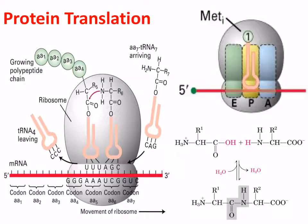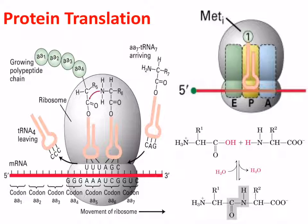Just to remind ourselves what protein translation looks like — this was covered in molecular lecture 3 — in particular, the coming together of the ribosomes with the messenger RNA. The RNA is read in sequences of three known as codons, and these codons are paired with anticodons from transfer RNA molecules. These transfer RNA molecules carry specific amino acids which are then added to a growing polypeptide chain in the creation of a new protein.